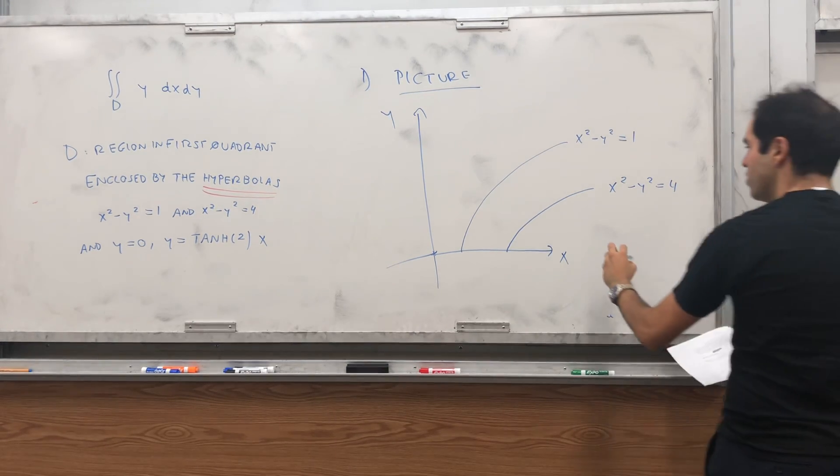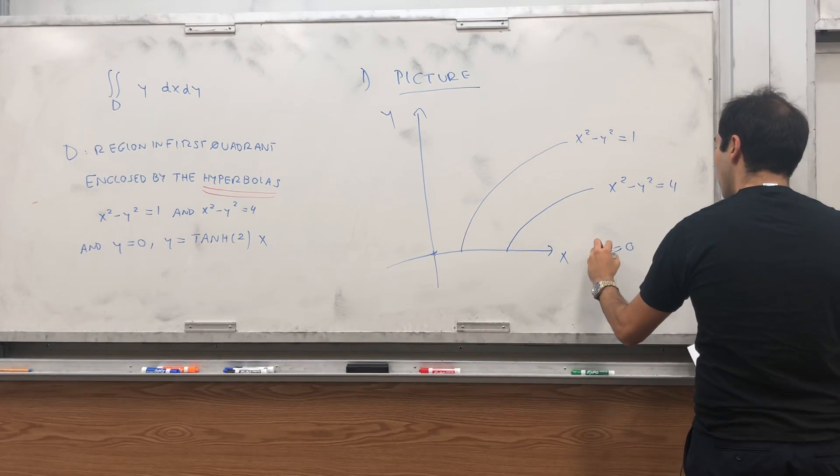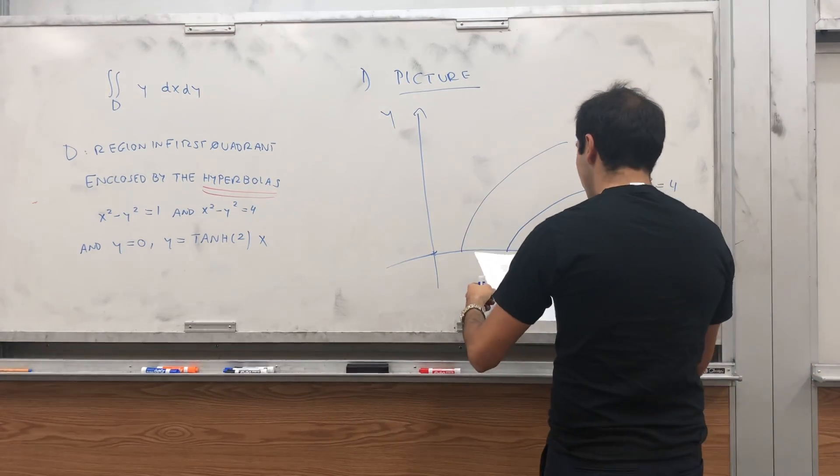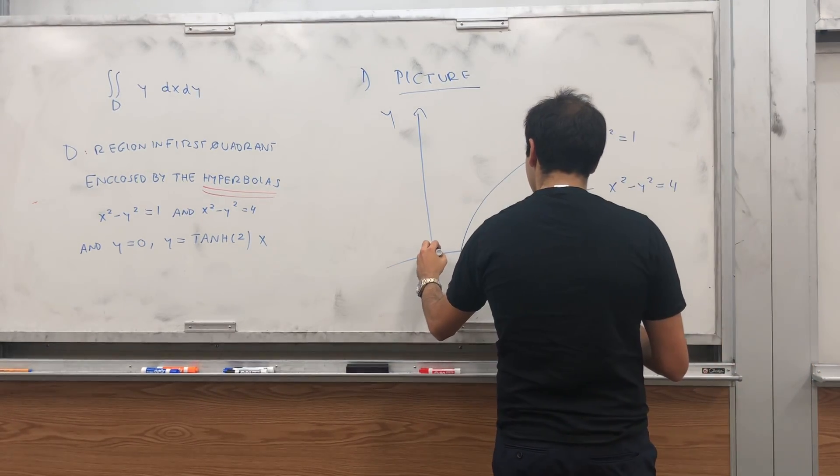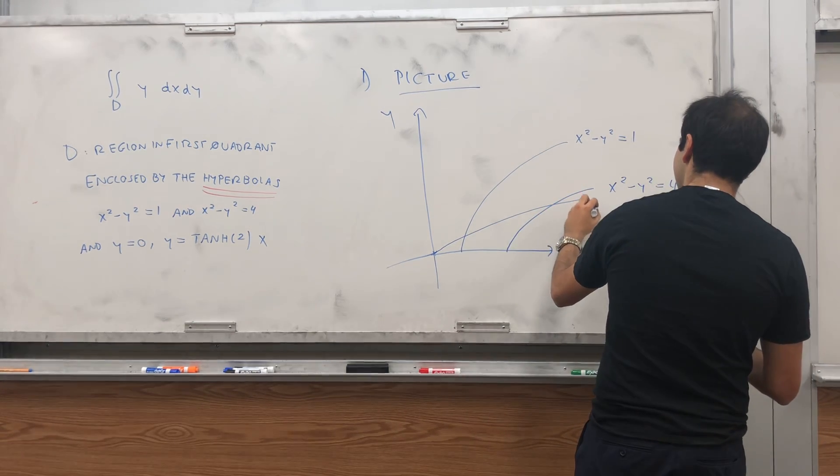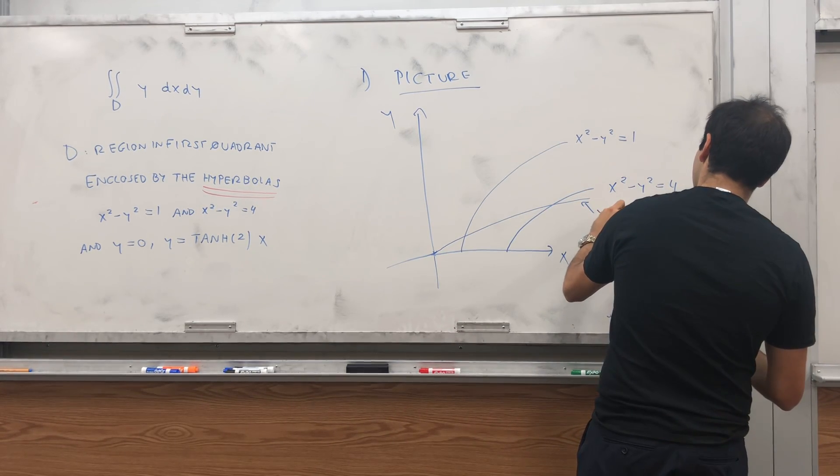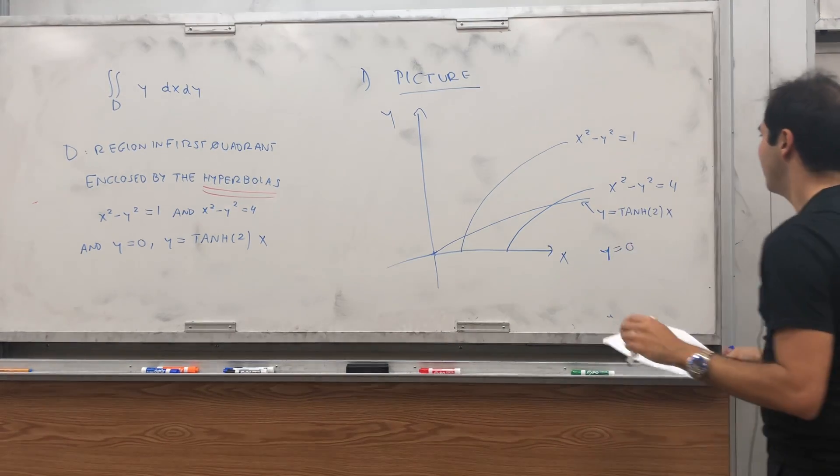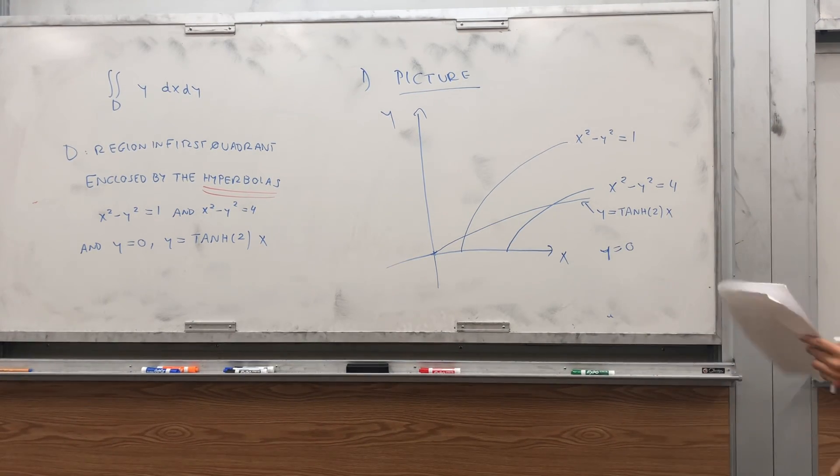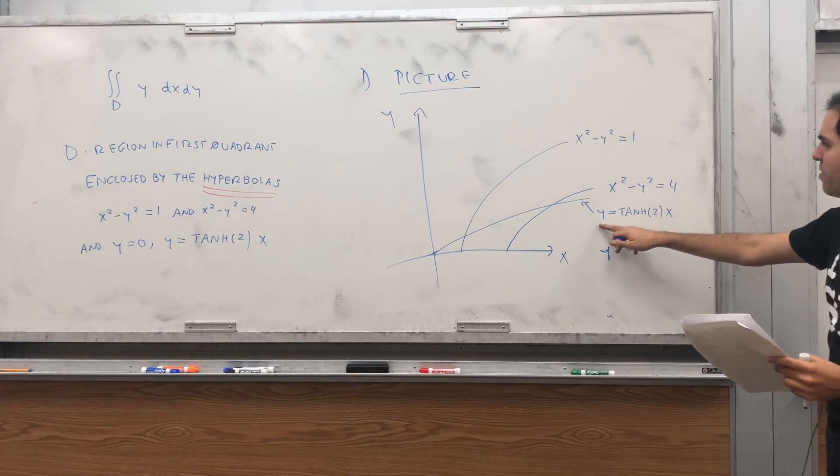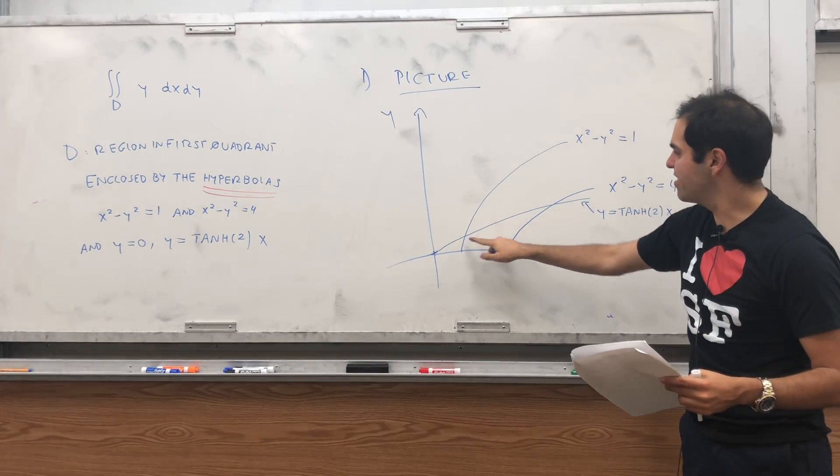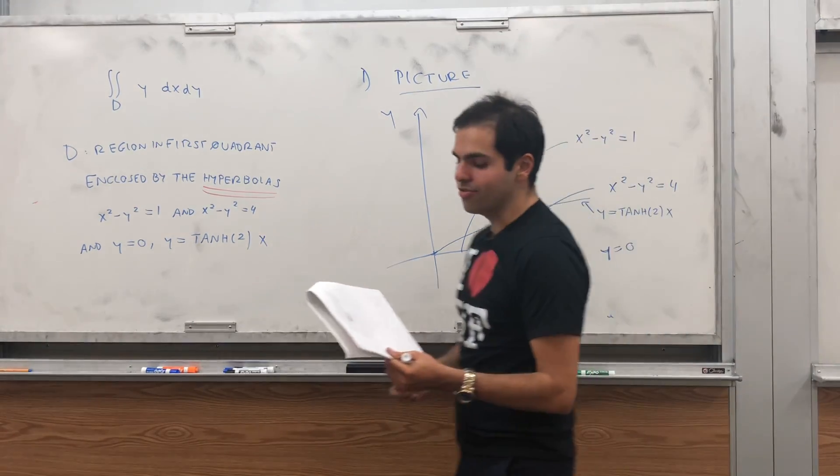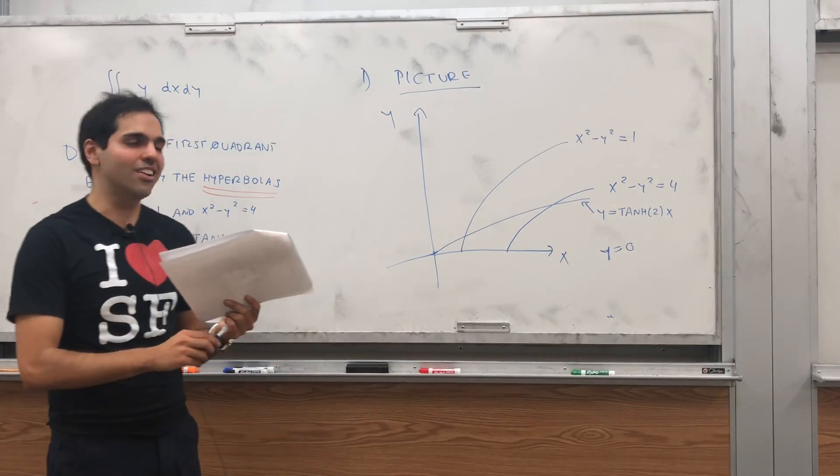And lastly, two lines. We have the horizontal line y equals to 0, and then the line y equals to tanh 2 of x, which might look something like that. Assume for now that it just intersects that line in one. Assume that, sorry, this line intersects the hyperbola in precisely one point each. You can do this with some algebra, but it's not why we're here today.